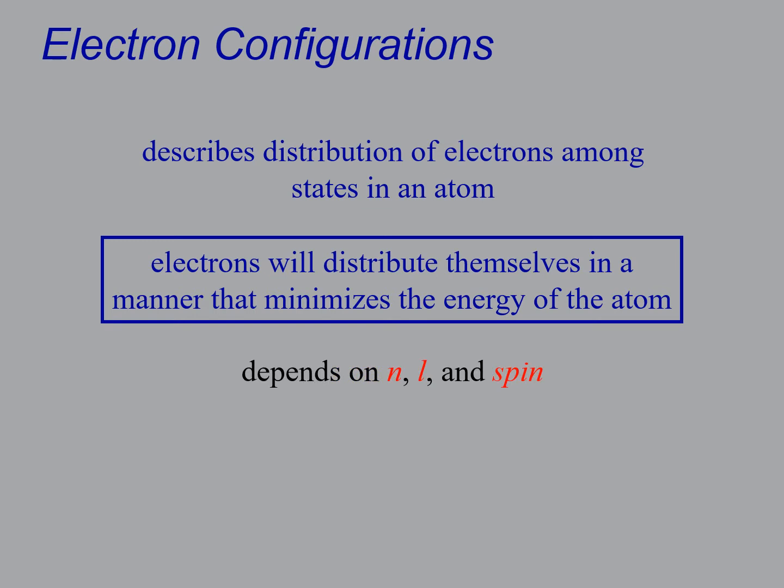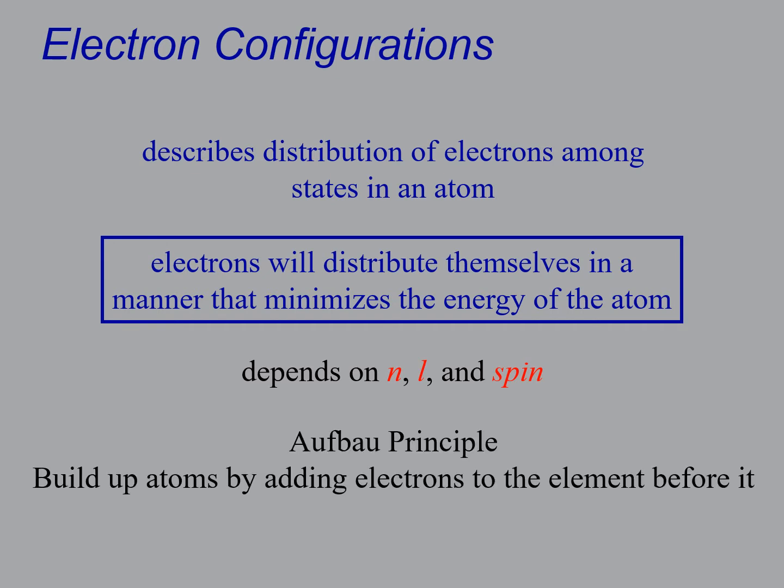And this overall depends on the values of the quantum numbers n and L and actually the spin as well. We haven't talked about that one. We will. And this is referred to as the Aufbau principle which simply states that you build up atoms by adding an electron to the element before it because you're adding electrons in the least energetic way possible.